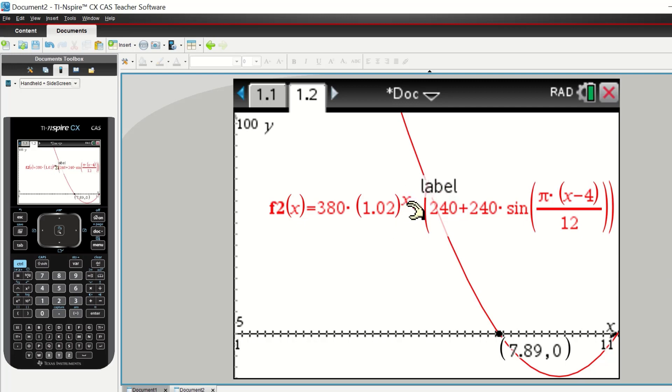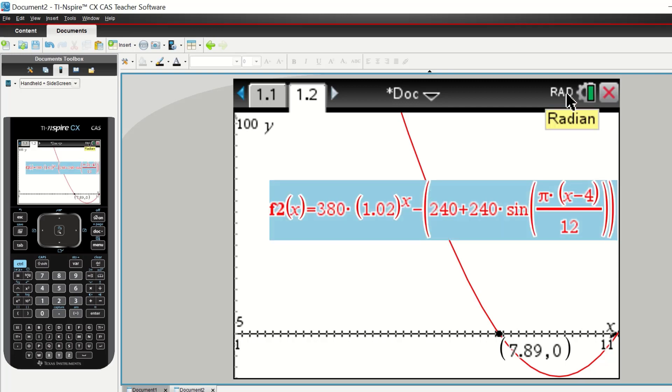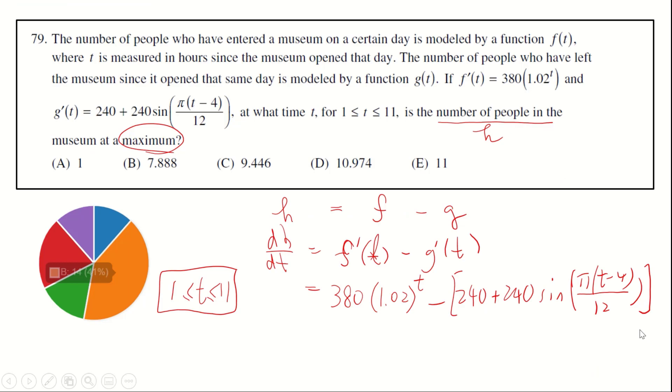Using the GC, you are able to graph this function. Remember when you key in this function, write everything in x not in t, and check that the mode should be in radian not in degree. According to what we have, the answer should be B.